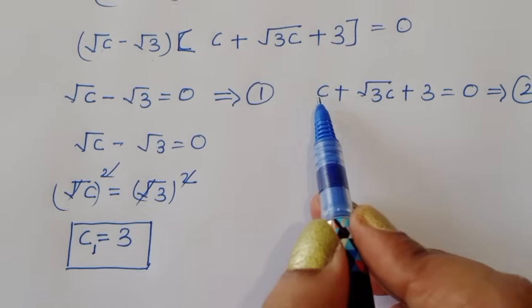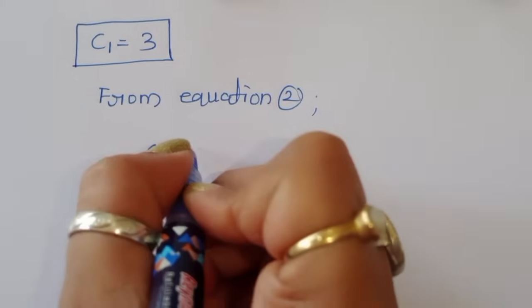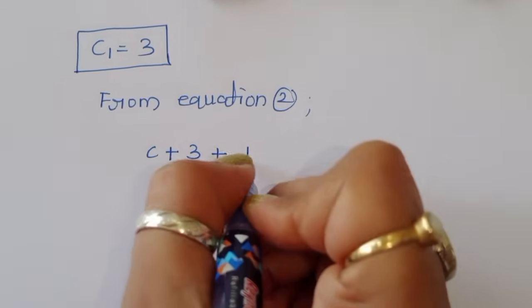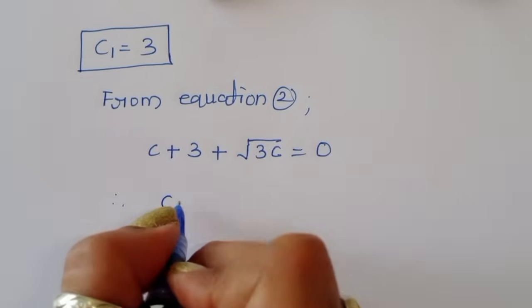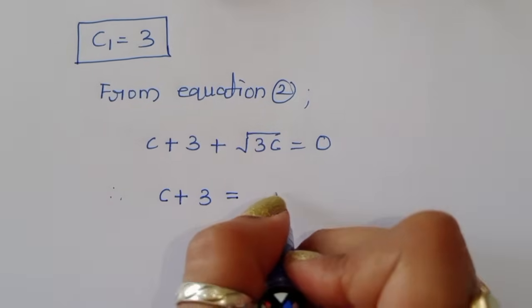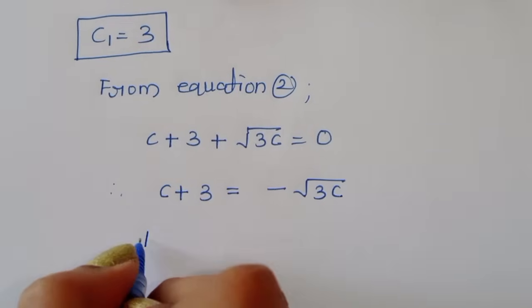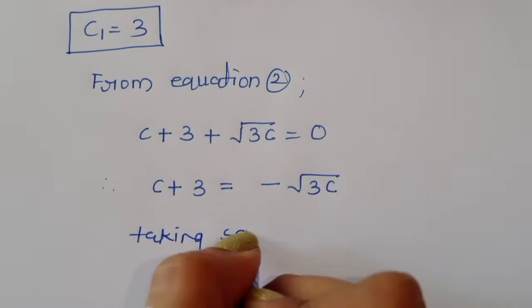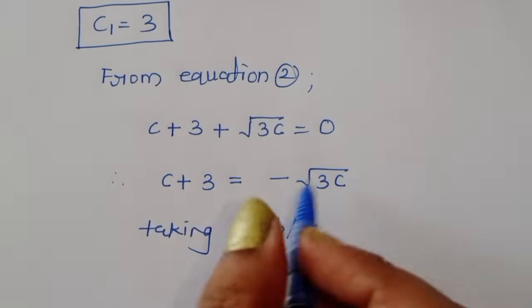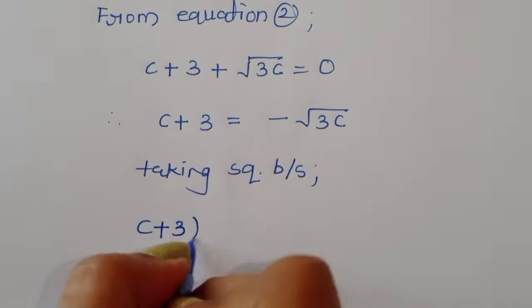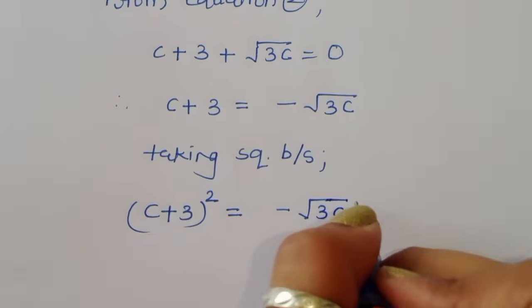Now solving Equation 2: c plus √(3c) plus 3 equals 0. Rearranging, c plus 3 equals minus √(3c). Taking squares on both sides to eliminate the square root, we get (c plus 3) whole squared equals (minus √(3c)) whole squared.